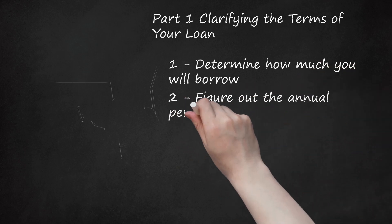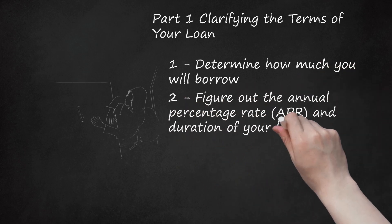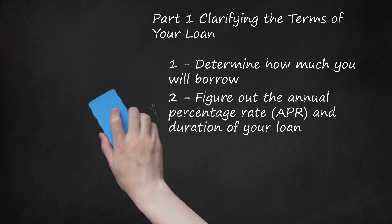Step 2: Figure out the Annual Percentage Rate (APR) and duration of your loan. The APR reflects how much additional money you will have to pay beyond your principal for each year of your loan. A low APR will reduce the yearly and monthly amounts of finance charges. However, many low APR loans are longer in duration, so the overall cost may remain relatively high. Alternatively, a short-term loan with a higher APR may end up being cheaper overall. This is why it is important to calculate your finance charges beforehand. Be sure to research and select the cheapest available combination of APR and duration.